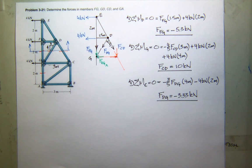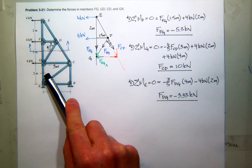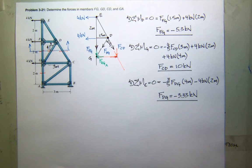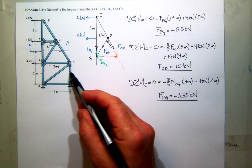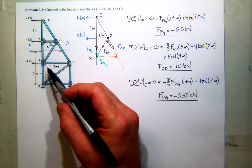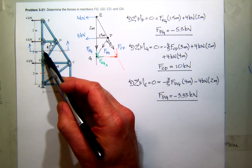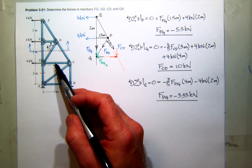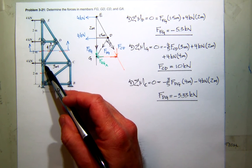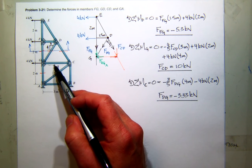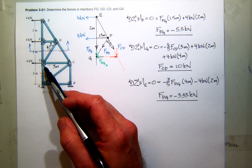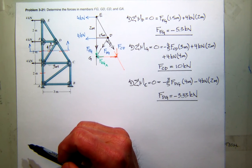We're not done. We do have to find GA. How's the best way to find GA? You could cut another section. You could do method of joints at G now. You would know this force and this force. You don't know this force and you don't know this force. But this is only a Y, and this is only an X. So you could do a method of joints at G and sum in the Y direction. So I'll do that.